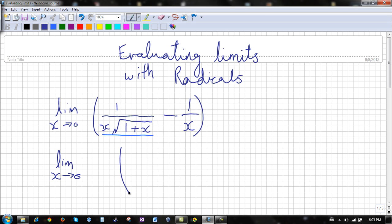So the limit as x goes to zero. Our common denominator in this case would be x root 1 plus x. So after getting a common denominator, we would have 1 minus root 1 plus x, all divided by x root 1 plus x.